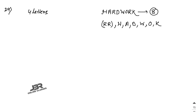We are to form words containing 4 letters. There are 2 cases. Case 1: The word contains double R and 2 other letters. We choose the 2 R's (that's 2C2 = 1), and then choose 2 more letters from the remaining 6 letters (H, A, D, W, O, K), giving 6C2.